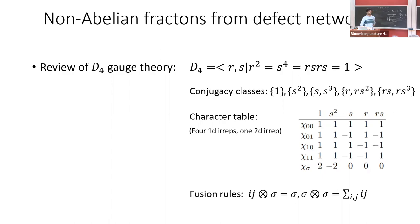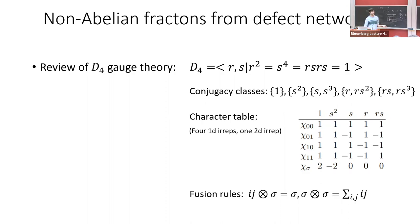All of this reproduces models that we already know. Now I want to go through an example where we build a new fracton model where the fractons are non-Abelian. Why is this interesting? People want to build topological quantum computers and we need non-Abelian excitations for that. Also, in 3+1D, point-like excitations don't have any non-trivial braiding between each other, but if you lower the particle mobility you can get non-trivial braiding for point-like excitations even in 3D. Fracton models are a way to get non-Abelian charges or excitations in a 3D system, which may be useful for quantum computation.